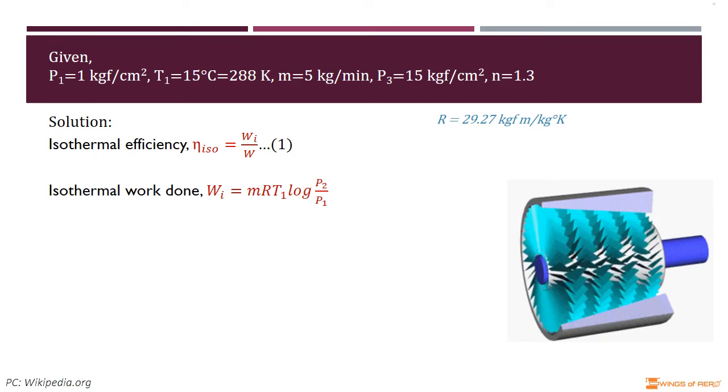Where mass rate ṁ, inlet temperature T₁, and initial pressure P₁ are given. R is the gas constant for air, which is 29.27 kgf·m/(kg·K). P₂ is the pressure at the end of first stage of compression, which is unknown.